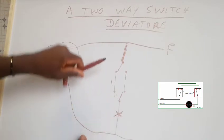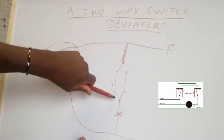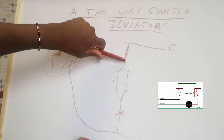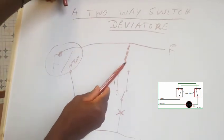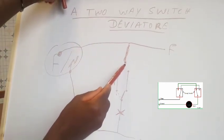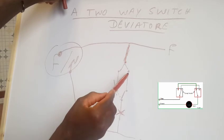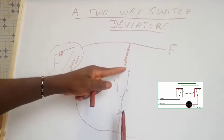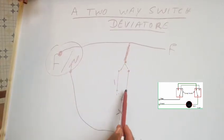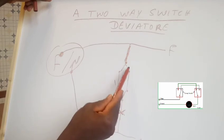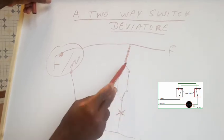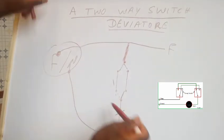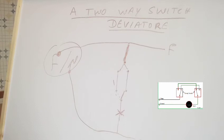Now, if you've turned on the light from one switch, as I explained at the beginning, and you press the second switch while exiting, the contact returns to the other side, breaking the connection — so the light turns off. That means you can turn the light on from one location and turn it off from another, or vice versa. That is why it's called a two-way switch.